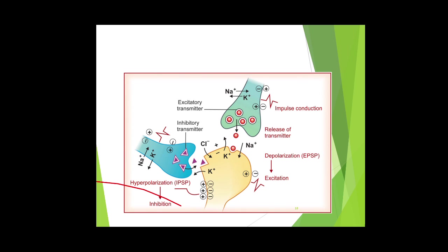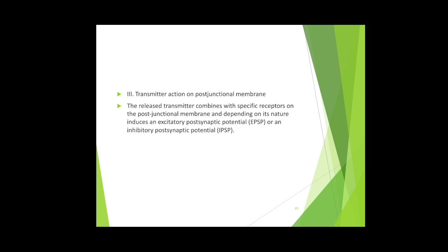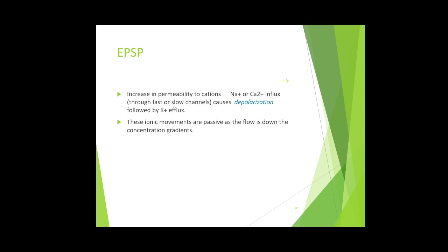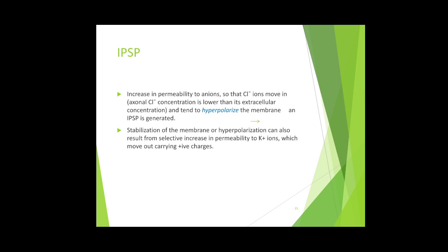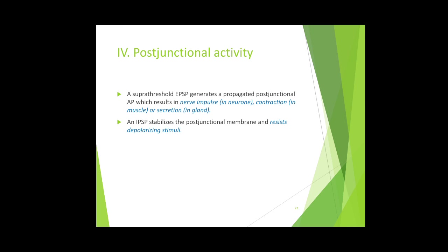The space between the two terminals is called the synaptic cleft. The third process is transmitter action on the post-junctional membrane. If the neurotransmitter is excitatory, it produces an excitatory post-synaptic potential (EPSP) — with influx of sodium and calcium ions causing depolarization. If it is inhibitory, permeability to chloride ions increases, causing hyperpolarization — this is an inhibitory post-synaptic potential (IPSP).